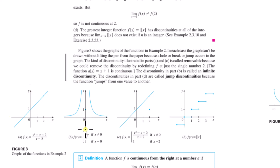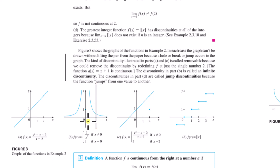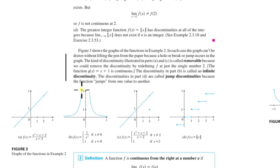A vertical asymptote is where the function, as x approaches a single value, goes to infinity. If you have a limit as x approaches a number and the function goes to infinity, that line is called a vertical asymptote, and this is a discontinuity called an infinite discontinuity. At vertical asymptotes you always have to pick up your pen to cross over, so those are discontinuities.